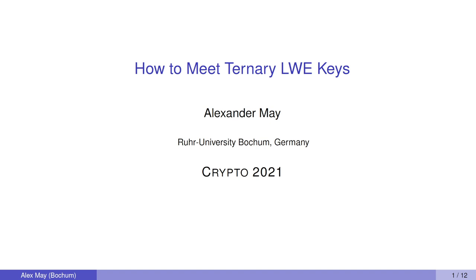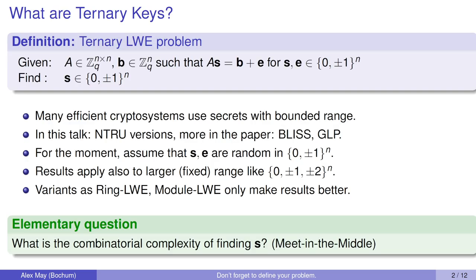Hello everybody! This is Alex Smai from Ruhr University Bochum and you are listening to the talk how to meet ternary LWE keys. So what do I mean by ternary LWE keys? We are given an n-dimensional square matrix A and a target vector B. We have the usual LWE identity A times S is B plus E for some unknowns S and E, where S is the secret and E is the error vector. They are both n-dimensional ternary vectors, and your goal is to find the n-dimensional ternary secret vector S.